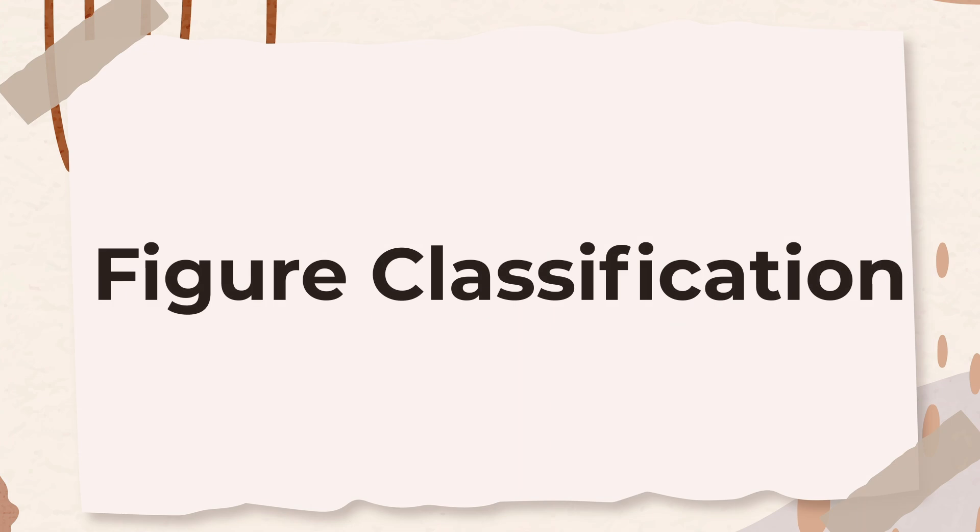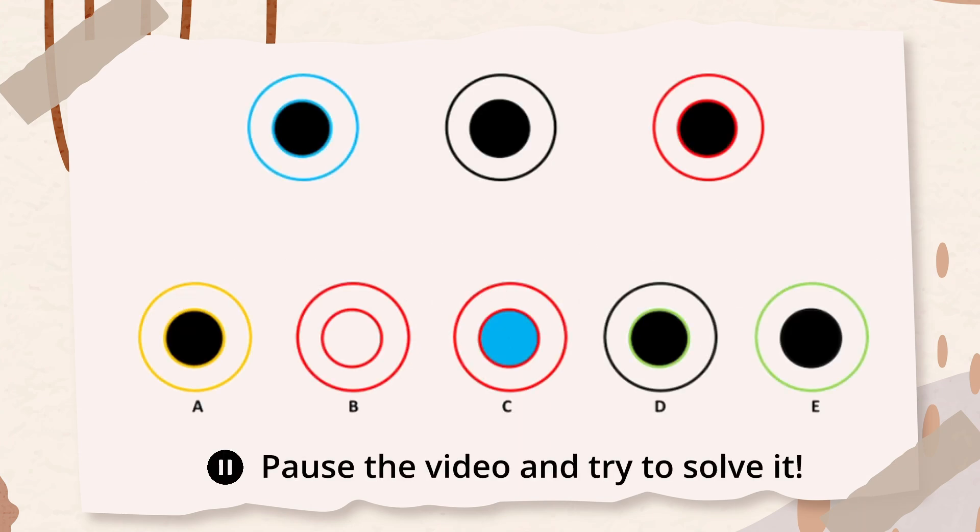The next subtest is figure classification. In this question, the first three figures are alike in some way. Choose the figure from the answer choices that goes with the first three figures.